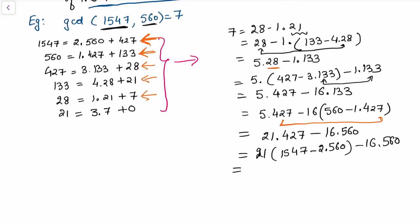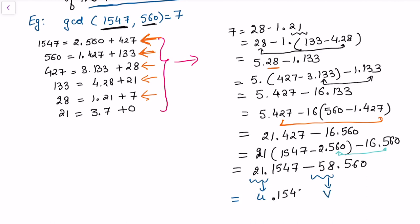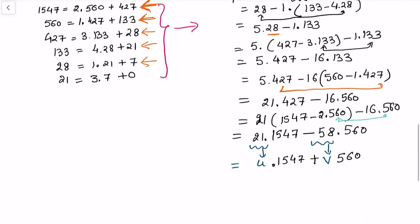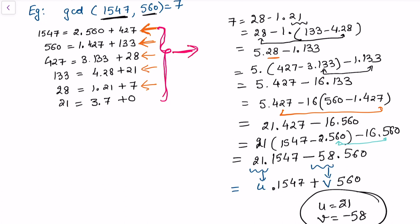Combining the 560 terms: 7 = 21×1547 - 42×560 - 16×560 = 21×1547 - 58×560. So we have now expressed the GCD as a linear combination of the original numbers. The value of u is 21 and the value of v is -58, giving us 7 = 21×1547 + (-58)×560. This is the extended Euclidean algorithm applied by back-substitution.